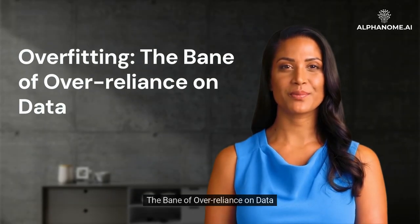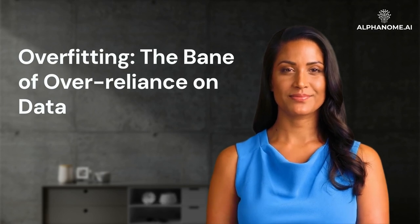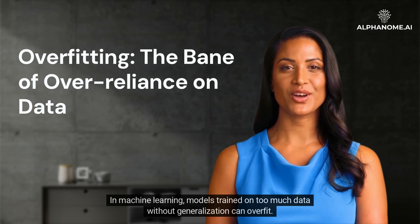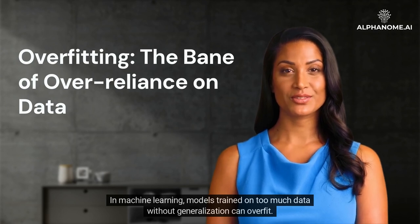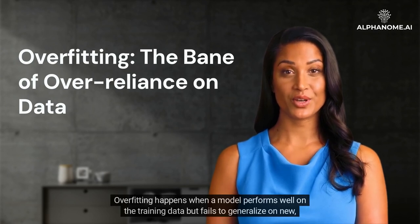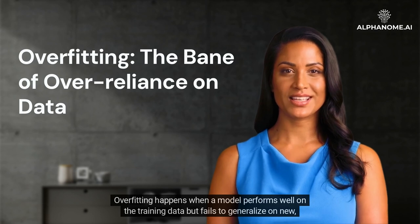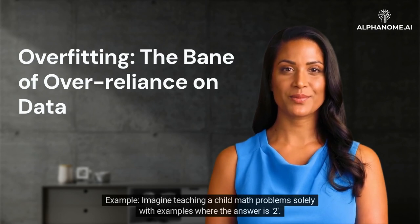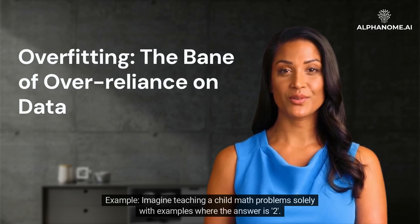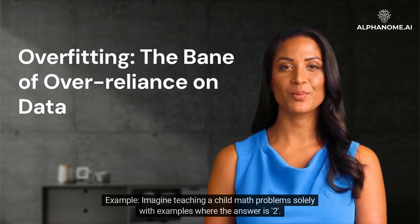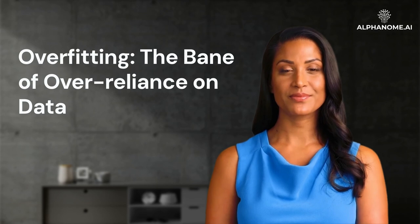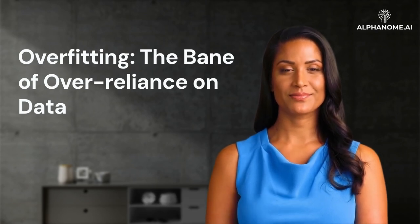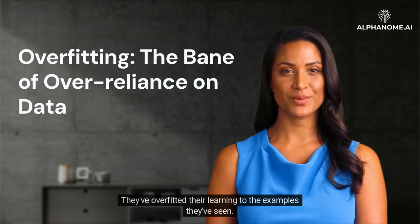Overfitting: The Bane of Over-Reliance on Data. In machine learning, models trained on too much data without generalization can overfit. Overfitting happens when a model performs well on the training data but fails to generalize on new, unseen data. Imagine teaching a child math problems solely with examples where the answer is 2 — the moment a problem has a different answer, the child is stumped. They've overfitted their learning to the examples they've seen.